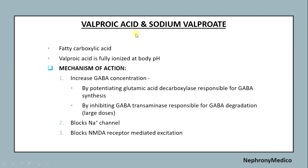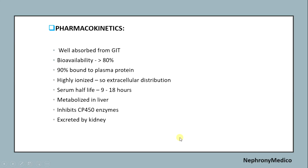Valproic acid and sodium valproate are fatty carboxylic acids. Valproic acid is fully ionized at body pH. Mechanism of action includes increasing GABA concentration by potentiating glutamic acid decarboxylase, responsible for GABA synthesis, and by inhibiting GABA transaminase, responsible for GABA degradation. It also blocks sodium channels and blocks NMDA receptor-mediated excitation. Pharmacokinetics: well absorbed from GIT, bioavailability more than 80%, 90% bound to plasma protein, and highly ionized with extracellular distribution.